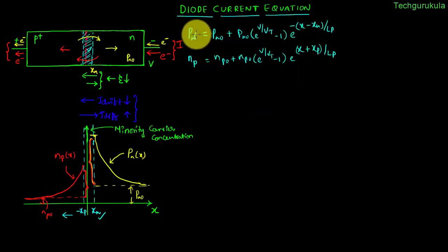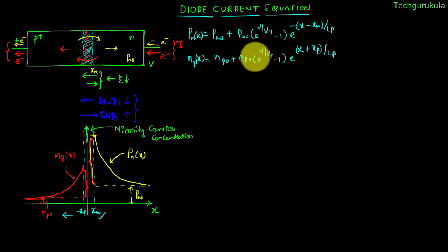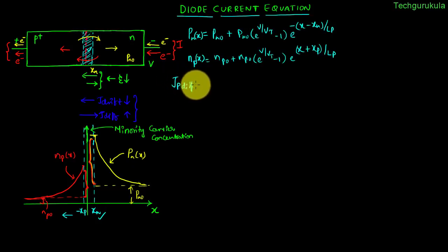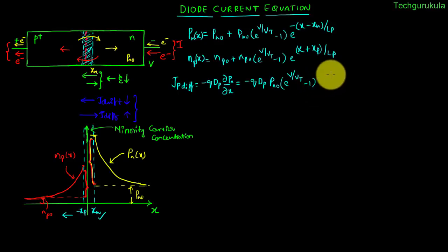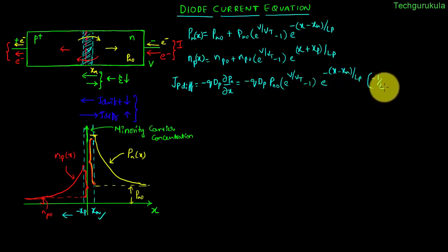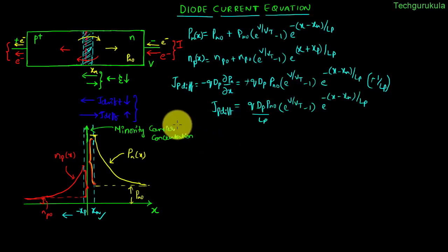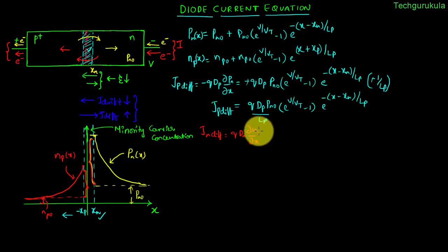We have found the carrier concentration variation with respect to space of minority carriers. Now, because of this carrier concentration gradient we have diffusion current. Diffusion current density of holes J_p,diff is given by −q·D_p·∂p/∂x. We can find this value, which would be equal to (q·D_p·p_n0/L_p)·(e^(v/V_T) − 1)·e^(−(x − x_n)/L_p). Similarly we can find J_n,diff = q·D_n·∂n/∂x, where n is the minority carrier concentration on the p-side.